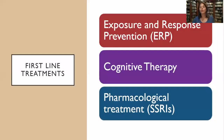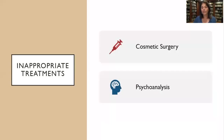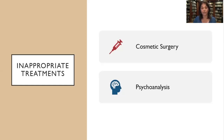What are our treatment strategies based on this model? One is behavioral — exposure and response prevention. Others are cognitive therapy and pharmacological treatments. For today's talk, we'll focus on exposure and response prevention and cognitive therapy. What we don't want to do is cosmetic surgery, because that usually worsens symptoms. And we don't want to engage in psychoanalysis or talk therapy, because that makes individuals more obsessional and doesn't target changing the way you think about yourself.